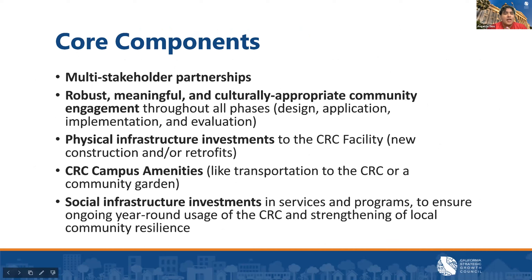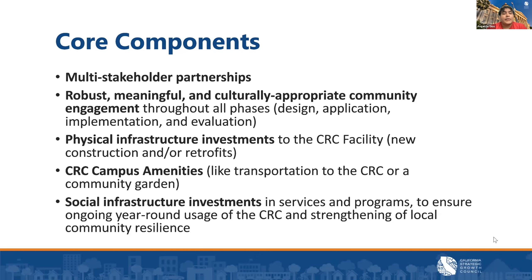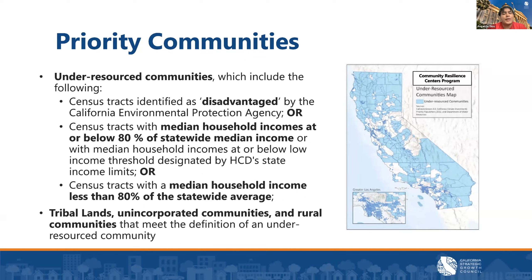The CRC model is intentionally flexible to account for the vast spectrum of communities across California. Core components include: multi-stakeholder partnerships — per statute including local residents, community-based organizations, and governments in decision-making; robust, meaningful, and culturally appropriate community engagement through all phases — design, application, implementation, and evaluation; capital projects referring to physical infrastructure investments to the CRC facility itself and campus amenities like a bus stop or community garden; and community resilience services and programs — social infrastructure investments to ensure ongoing year-round usage of the CRC while strengthening local community resilience. Equipped with these core components, CRCs will empower communities to respond to climate emergencies and provide year-round services.